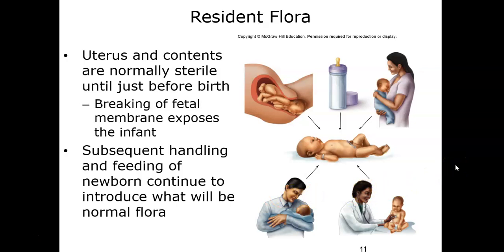How do we start to acquire our resident flora? Prior to the newborn passing through the birth canal, the uterus and its contents are normally sterile. However, when the fetal membrane breaks, the infant is exposed to microbes in the surrounding environment. Passage through the birth canal and the subsequent handling and exposure to the environment means some of that flora gets passed on to the baby. Breastfeeding is another way that children acquire their basic normal flora as they begin life.